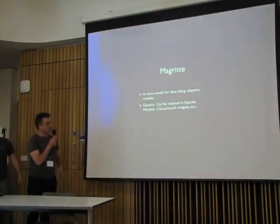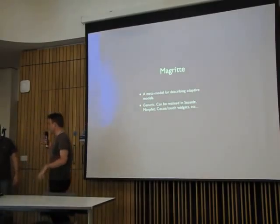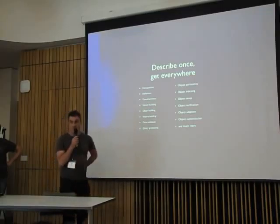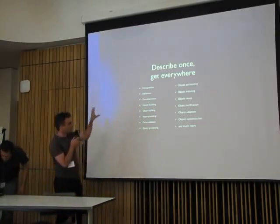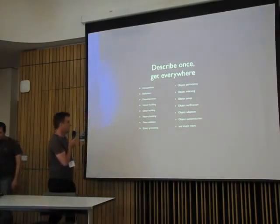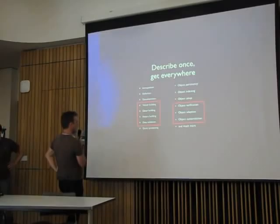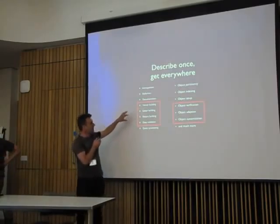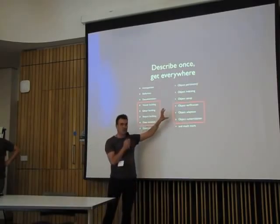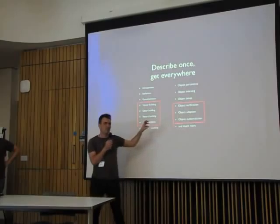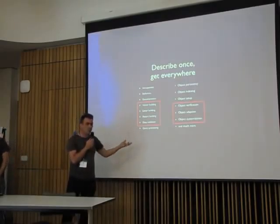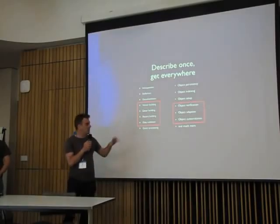The key thing is that it can be realized really easily in Seaside and Morphic, and Esteban has written some very cool Coco Touch with this as well. When Lucas originally did his presentation, he put up this slide: 'describe once, get everywhere.' In today's talk, we're going to be focusing on building viewers, customizing the viewer look, object verification, and how you can look at objects in very different ways. If you describe it once, you can render it as a usual form or you can get it using JSON or XML.